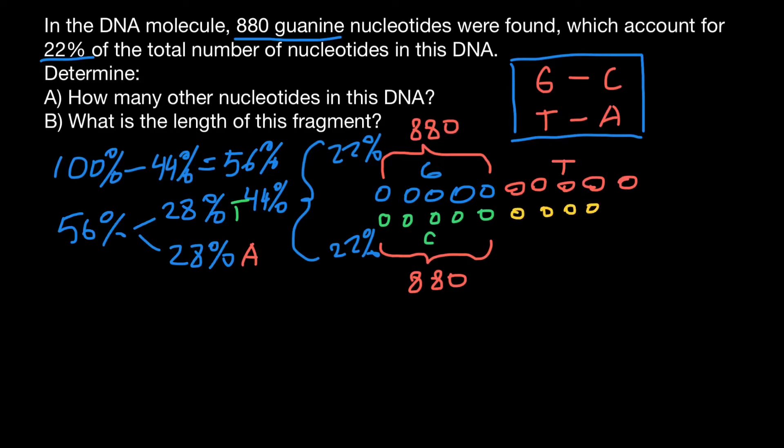And thymine base pairs with adenine. If we know that guanine is 880 and makes 22%, together 44% along with cytosine, which is also 880, it makes 22%, together 44%. We can find how much is 1%.